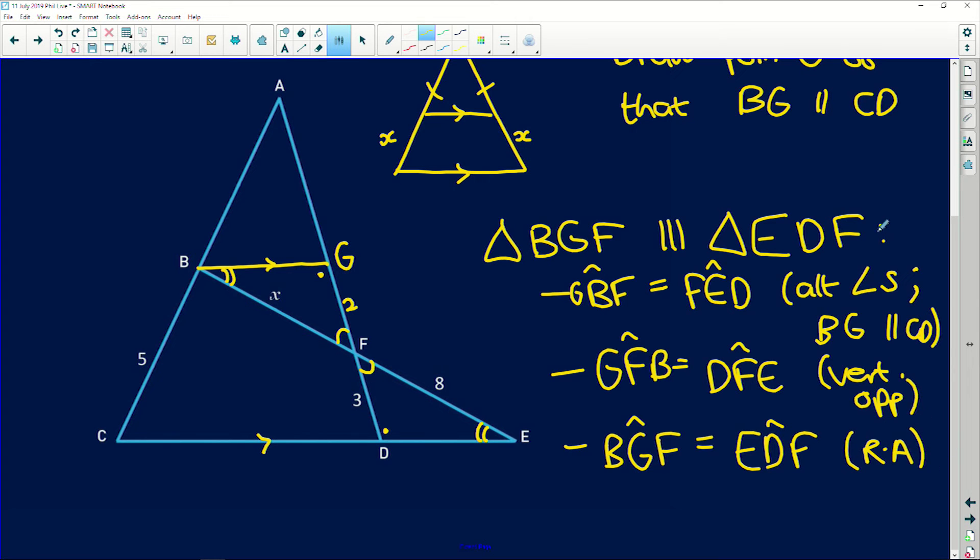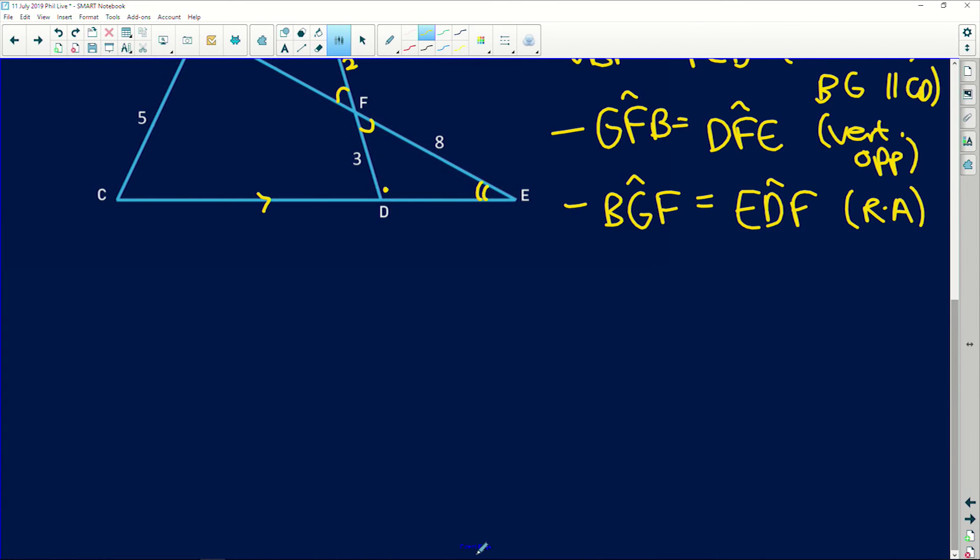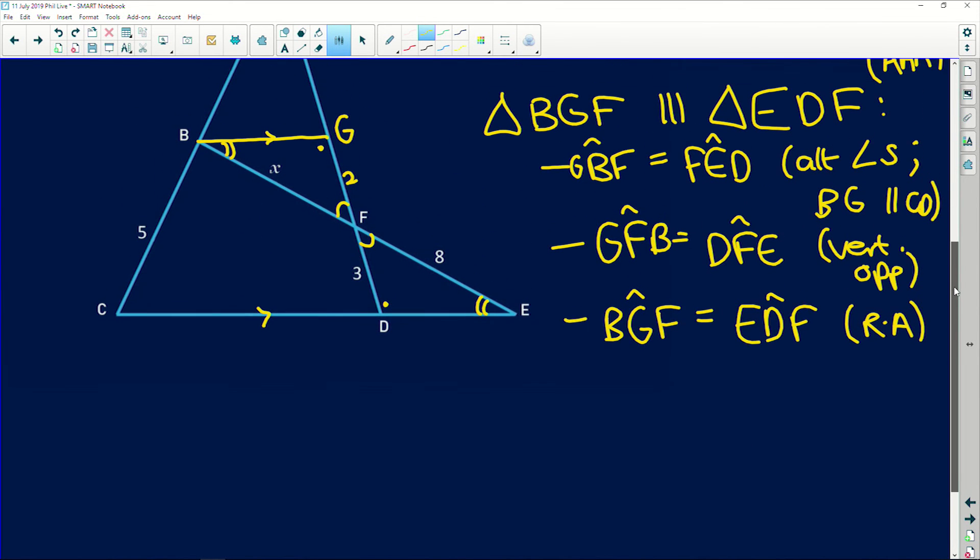Write these all out in full. So these two here are similar because of angle, angle, angle. Now, if we look at the ratios that we have, we can say that BF, which is what we're trying to find, over GF, BF over GF is equal to EF over DF. And why is that? Because of similarity.